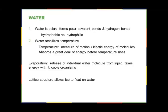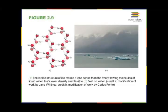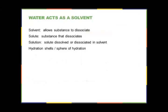Water forms a lattice-like structure, which is what allows ice to float on top of water. As water cools it condenses, down to about four degrees Celsius. Once it reaches four degrees Celsius, it begins forming the lattice, which pushes molecules further apart, making it less dense — which is why ice floats on water rather than sinking.